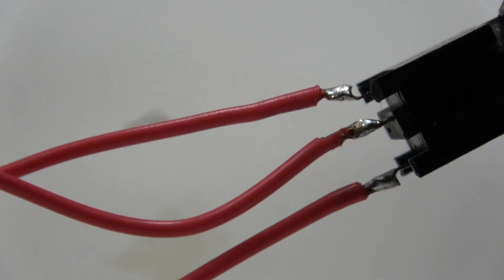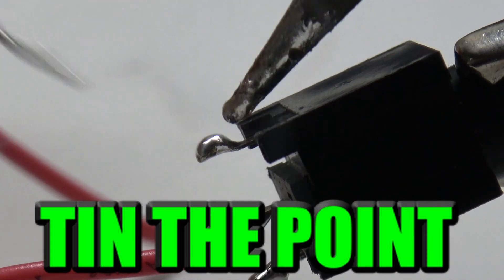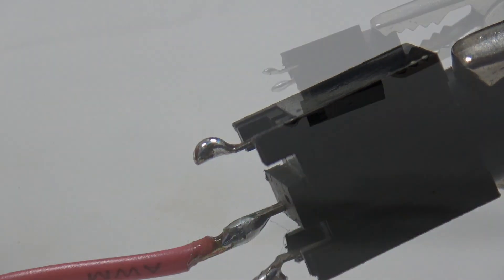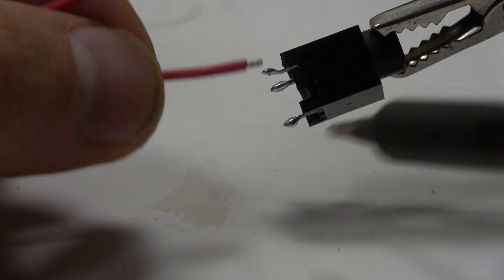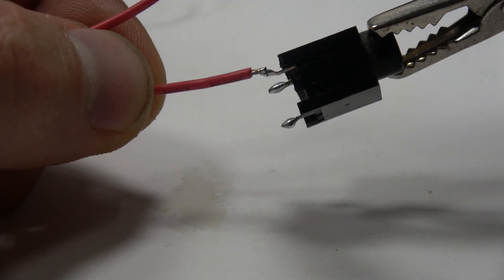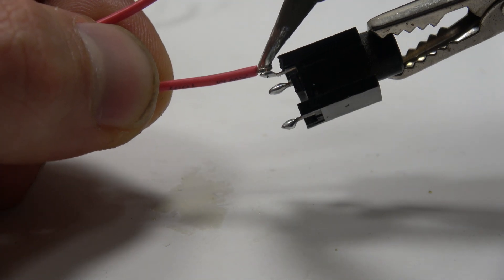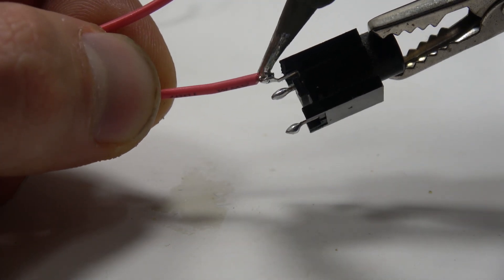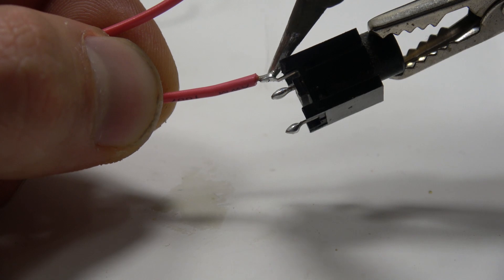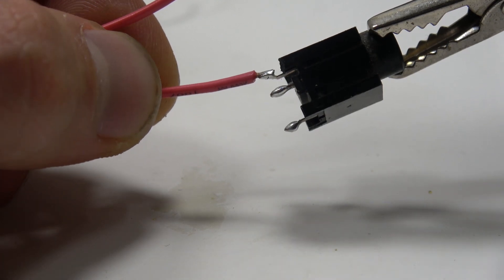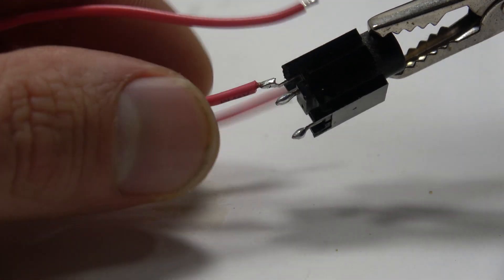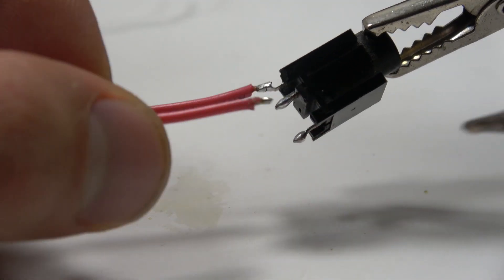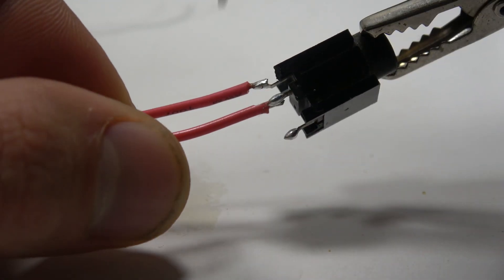Here we have just a little wire and we're going to tin it. Tinning it is always very important. Now that it's tinned, what we're going to do is we're just going to put the tin wire on it and just heat it up and just flow the solder. We're just going to do that two more times.